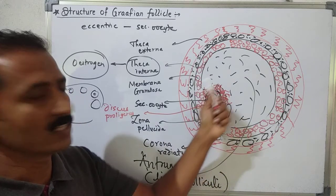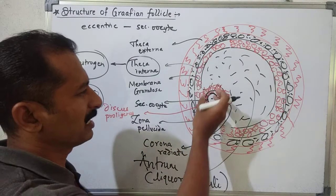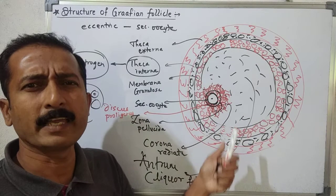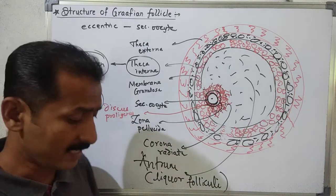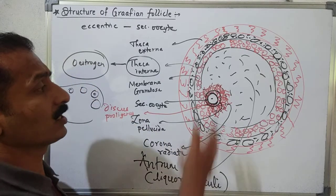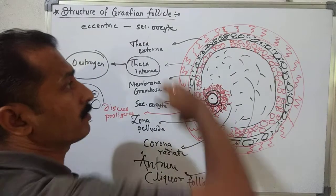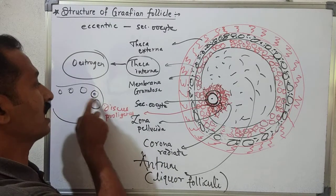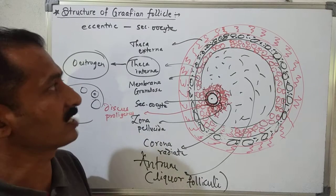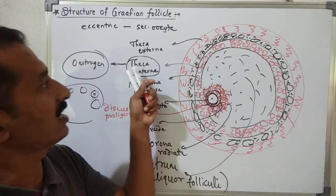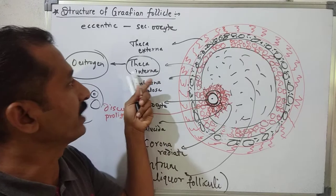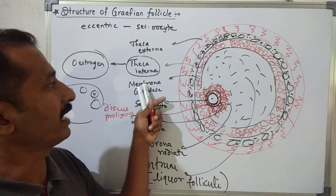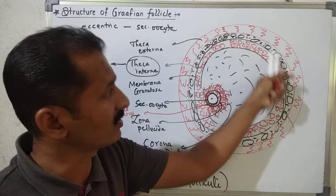The corona radiata has many layers. There is also a perivitelline membrane and perivitelline space associated with the oocyte — these will be discussed later when covering how the oocyte looks before ovulation. In summary: outermost is theca externa, then theca interna, then membrana granulosa made up of follicular cells.